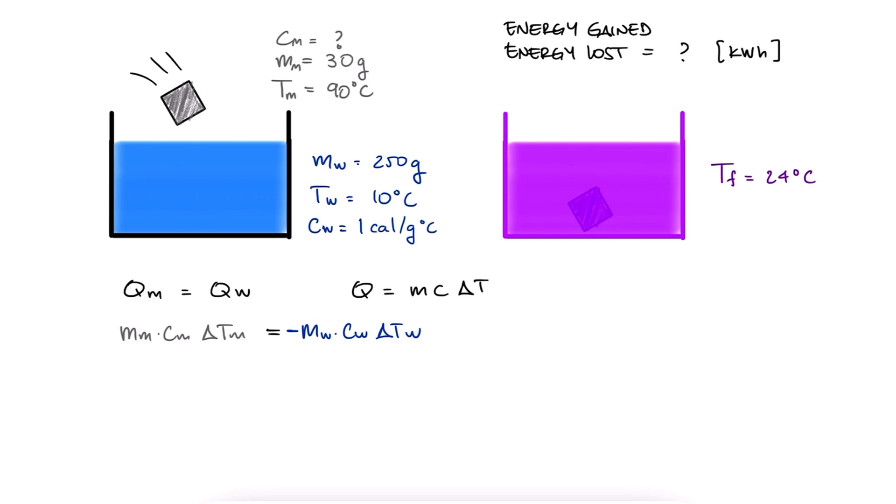And it doesn't matter where we place the negative sign here. We'll learn a lot more about sign conventions in two lectures from now, link below. The delta temperature expressions are final temperature minus initial temperature for both cases, where the final temperature for both is the same 24 degrees Celsius. We solve for the specific heat of the metal.